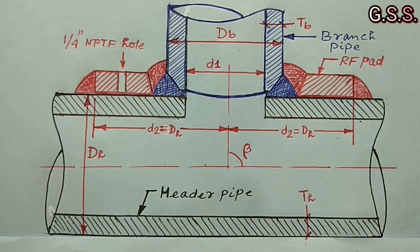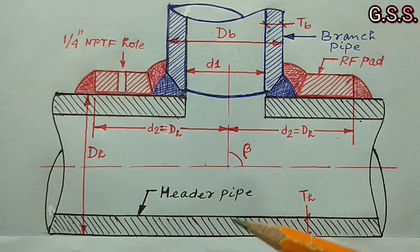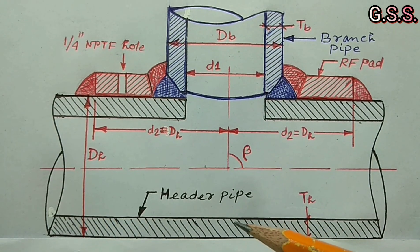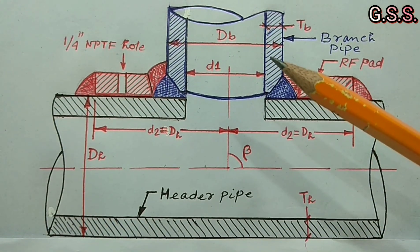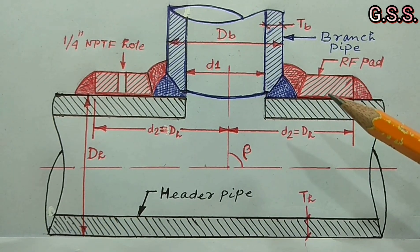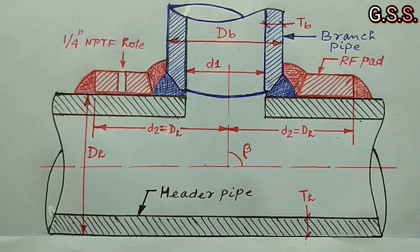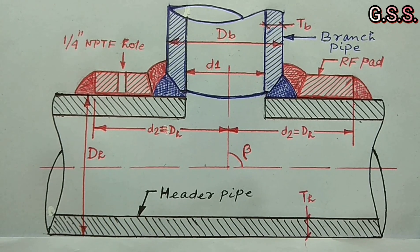This is a sketch of a reinforced branch connection with RF pad. The header pipe is shown in black color, the branch pipe is shown in blue color, and the RF pad is shown in red color. If we do not consider the RF pad, then the branch is an unreinforced branch.